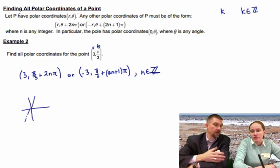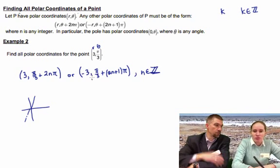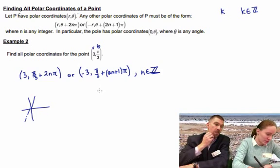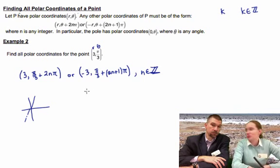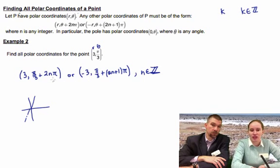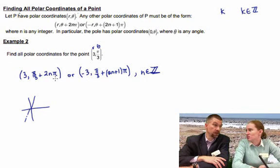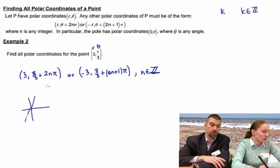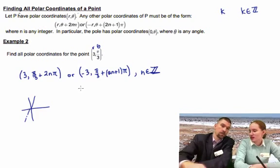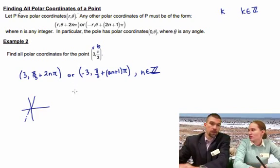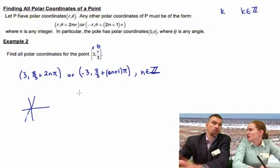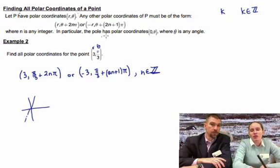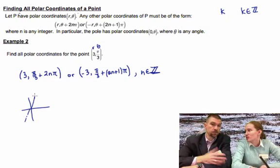You can't have n equal to 1.7 or some non-integer value. Something we could do is ask you to find three specific points by plugging in n = 0, 1, 2, 3, and so on. Or we could ask you to name all of the coordinates between two angles, like between 0 and 2π, and you'd have to think carefully about what's going on.